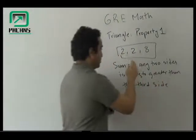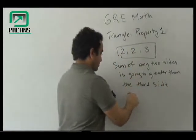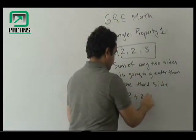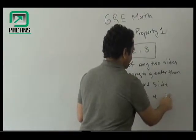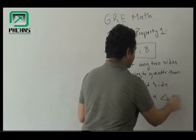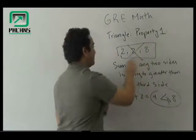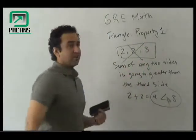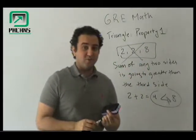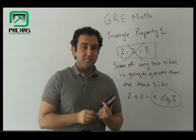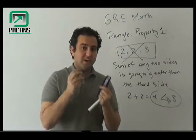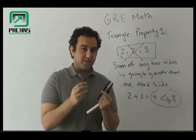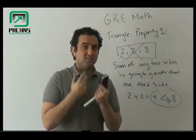For example, if you have two and two, which is four — four is not greater than eight, it is less than eight. So this cannot be valid; these cannot be the lengths of a triangle, because the sum of any two sides always has to be greater than the third side.